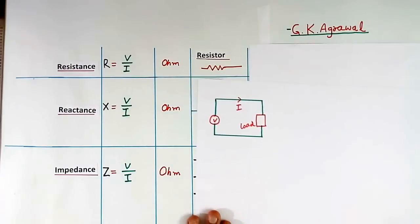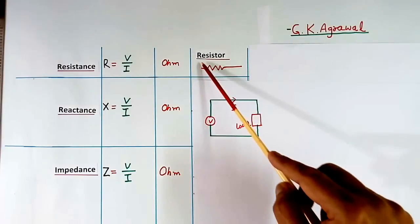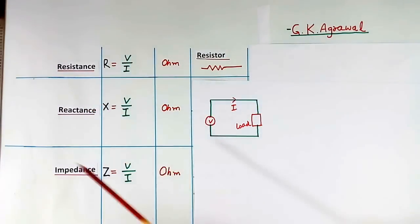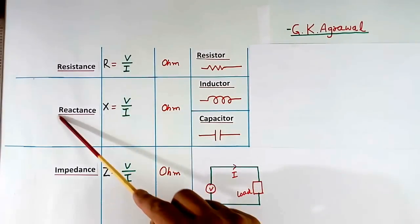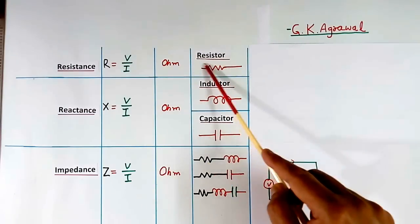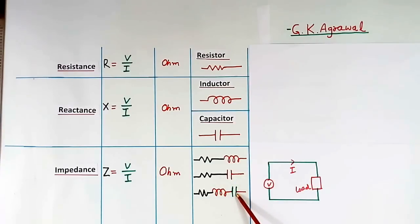Then what is the difference? When the load consists of only a resistor, then we call V by I resistance. When we have either an inductor or capacitor, then V by I is called reactance. And when we have a resistor and inductor both, or R and C, or R, L, and C all three, then V by I will be called impedance.